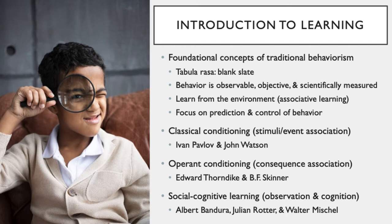Classical conditioning is an approach to learning through association, typically based on similarities in time and space that lead us to link together information. The association is between two stimuli — like associating the color purple with your favorite aunt — which leads to some sort of response, like having a warm feeling. Operant conditioning is another form of associative learning, but this time it's associations between responses and consequences, like rewards and punishments. Together, classical and operant conditioning form the foundation of behavioral learning.